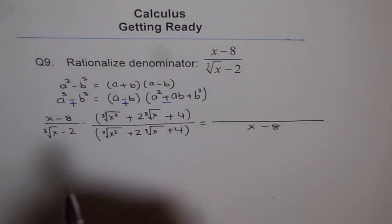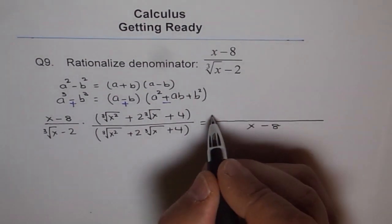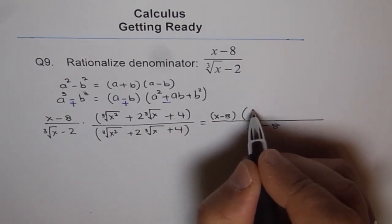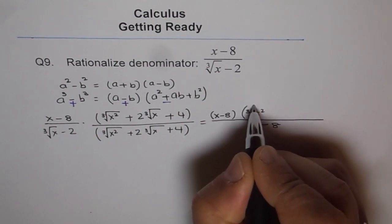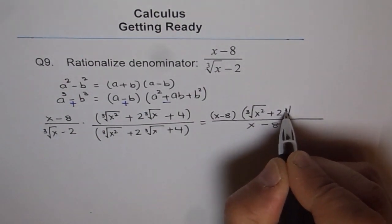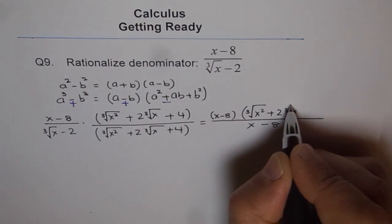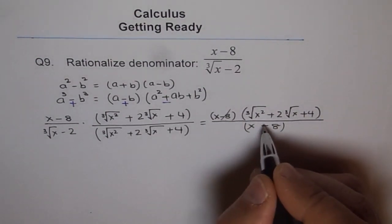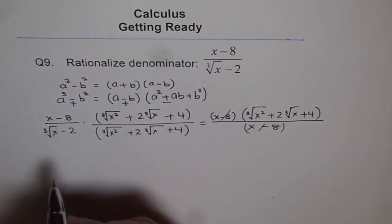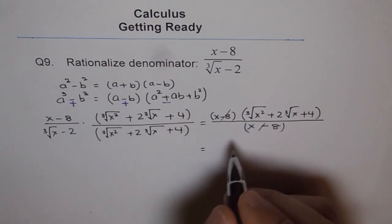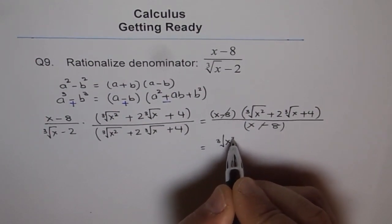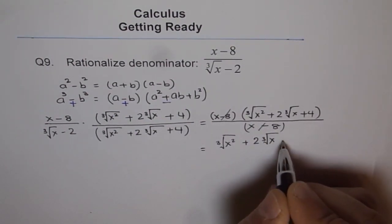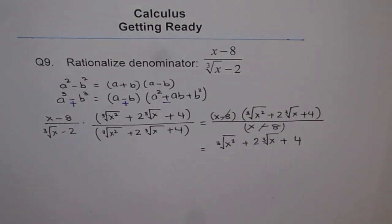You don't have to expand the numerator. The idea is to cancel out this common factor. We will write x minus 8, and we will multiply by all this, cube root of x square plus 2 times cube root of x plus 4. Now, we can cancel this to simplify, and we get our result. After rationalization, we get this equal to cube root of x square plus 2 times cube root of x plus 4. That is the result after rationalization.